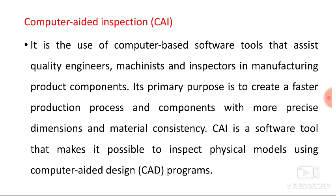Its role is to produce components at a faster rate — once the product is produced it is inspected, and if found okay the entire batch is produced. Whereas in conventional manufacturing, the entire lot is produced and then inspected, and if any defect is found in the lot, the entire lot gets rejected. In computer-aided inspection, each and every product is inspected and then assigned to the next stage. That is the benefit of computer-aided inspection.